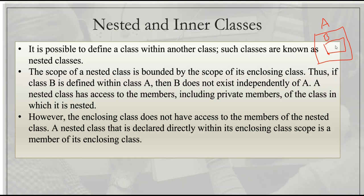A nested class has access to the members, including private members, of the class in which it is nested. Class A has a number of members and methods. However, class B does not have access to the members of A directly — it is more complicated than that.